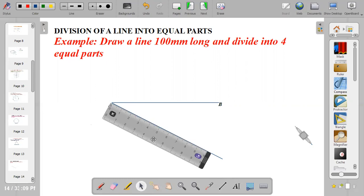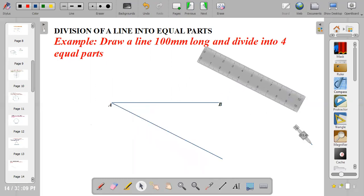Bring out your compass. Using any convenience radius, center at point A. Because the question says we should divide into four equal parts, we'll mark off four equal divisions. So I'll strike an arc, one.